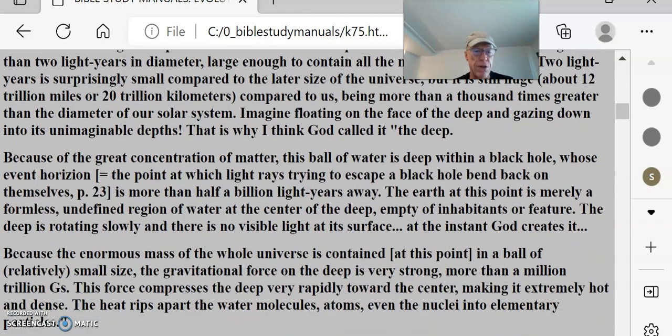Because of the great concentration of matter, this ball of water is deep within a black hole whose event horizon, the point at which light rays trying to escape a black hole, bend back on themselves, is more than a half a billion light years away. The earth at this point is merely formless, undefined region of water at the center of the deep, empty of inhabitants of our feature. The deep is floating slowly, rotating slowly, and there is no visible light at the surface at the instant God creates it.